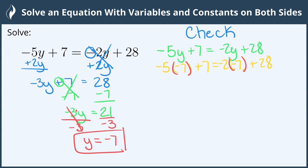So we're going to multiply first using the order of operations. Negative 5 times negative 7 gives us a positive 35 plus 7 equals, on the right side, negative 2 times negative 7 is positive 14. We still have the plus 28.